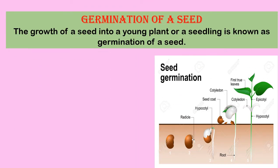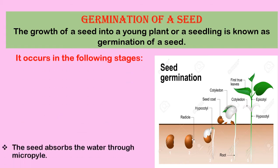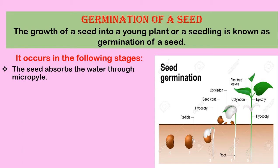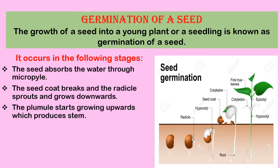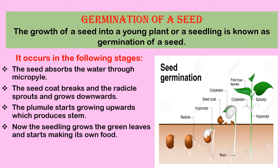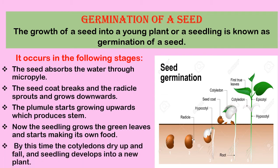Germination of a seed: the growth of a seed into a young plant or seedling is known as germination. It occurs in the following stages: the seed absorbs water through the micropyle; the seed coat breaks and the radicle sprouts and grows downwards; the plumule starts growing upwards, producing the stem; the seedling grows green leaves and starts making its own food; the cotyledons dry up and fall off, and the seedling develops into a new plant.